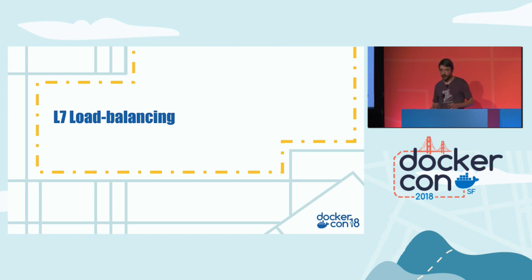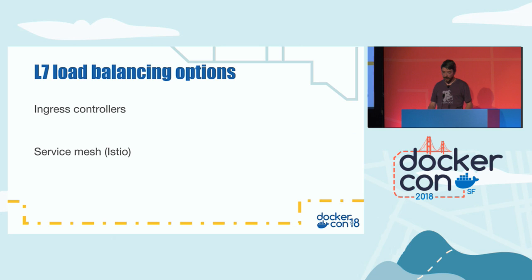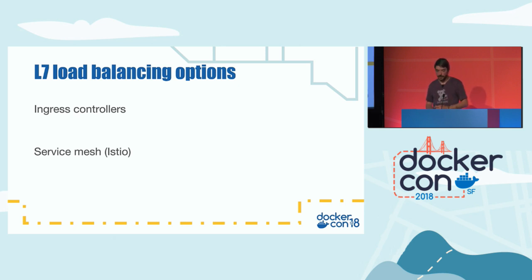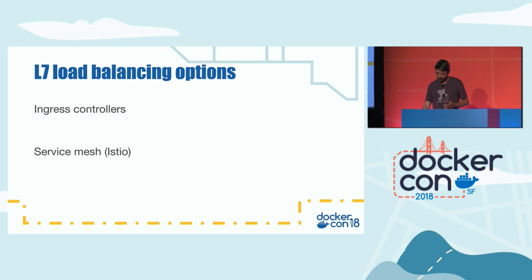So far we've only talked about layer 4 load balancing. For layer 7 load balancing with path-based or rule-based routing, you can use Ingress controllers, which are first-class resources inside Kubernetes. There's also Istio, which provides service mesh using local egress proxies on all pods. This is still very new but a very interesting domain that's going to move fast in the future.